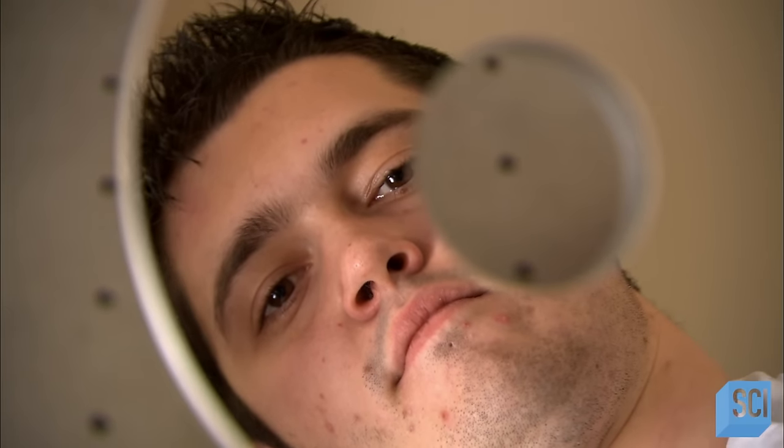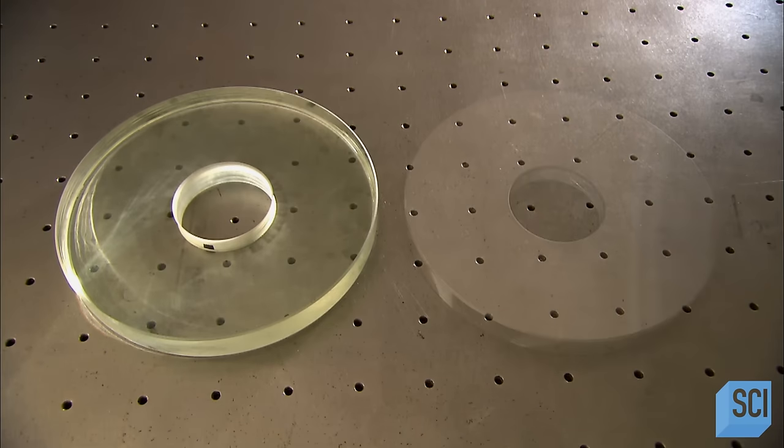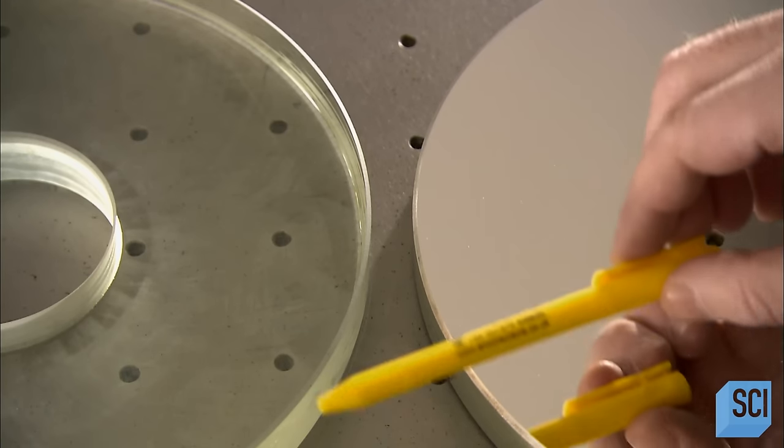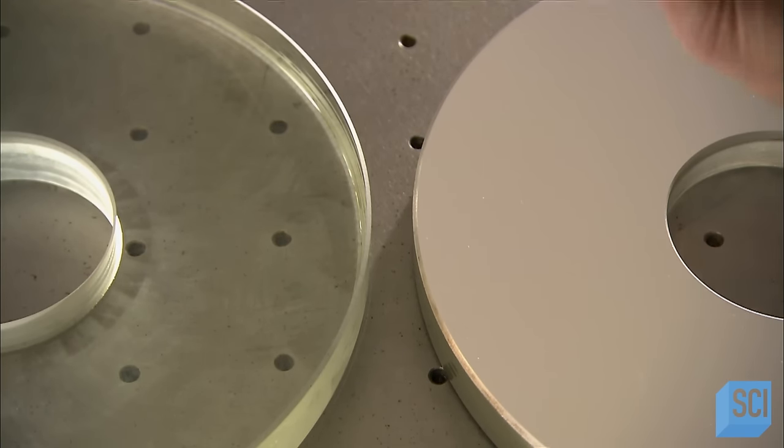It takes just minutes for this highly reflective coating to be applied. This telescope mirror is now ready to reflect light from the stars and planets in the sky.